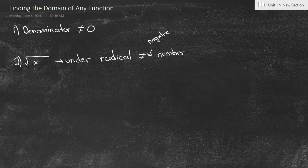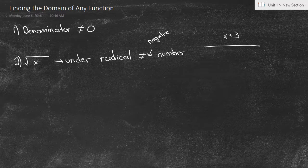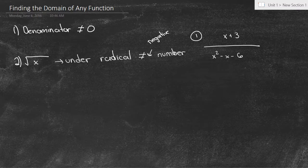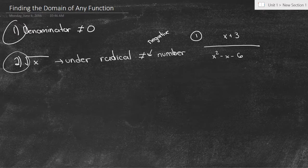So let's say we have some function — Example 1 — we've got x plus 3 divided by x squared minus x minus 6, and we were asked to find the domain. We see that there are no radicals, so we don't have to worry about rule number 2, but we do have to worry about rule number 1. We have to find when the denominator is going to equal zero.